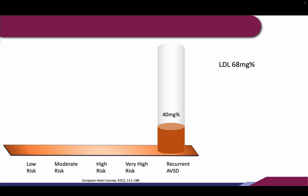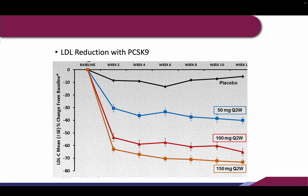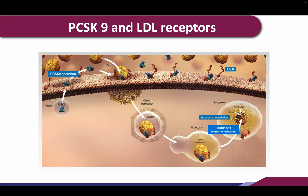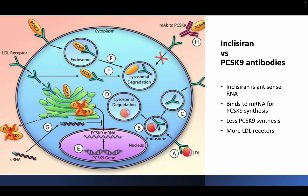We need an LDL less than 40 in this case, and currently it is 68. With ezetimibe and a high intensity statin, we can increase the statin, add bempedoic acid, or consider an injection — inclisiran. When we are looking for an LDL reduction of 70 to 80 percent, statins alone can't do it. We have options like PCSK9 inhibitors, or we can give inclisiran. The inclisiran injection is given first, then at three months, then every six months — making it very compliant for patients.